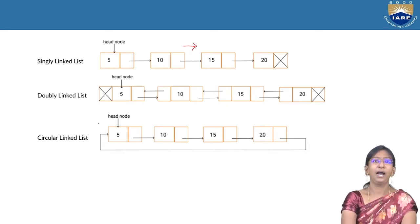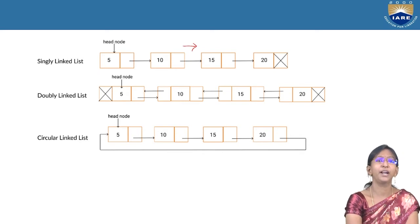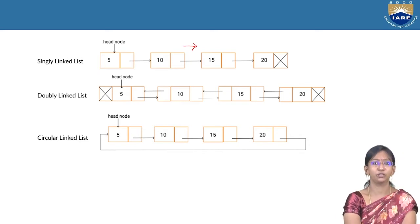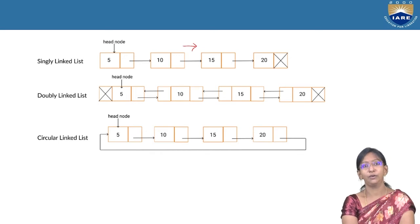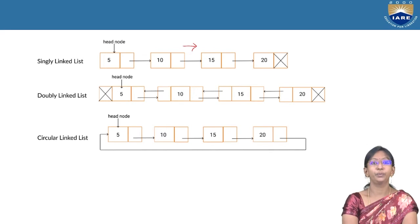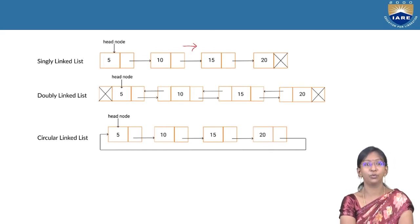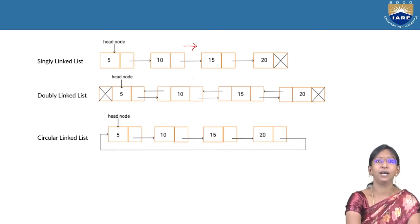The second part of the node holds the address of the next node. So we can only navigate in the forward direction. To traverse in the reverse direction, we need to extend the definition of the node by converting it into a double-linked list.